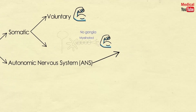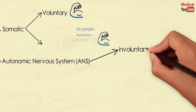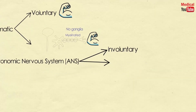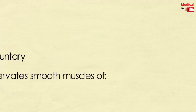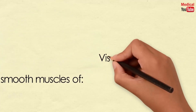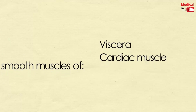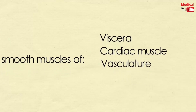The second division of the efferent portion of the peripheral nervous system is the autonomic nervous system, or ANS. It is responsible for all the involuntary functions that occur unconsciously. It is composed of efferent neurons that innervate smooth muscle of the viscera, cardiac muscle, vasculature, and the exocrine glands.